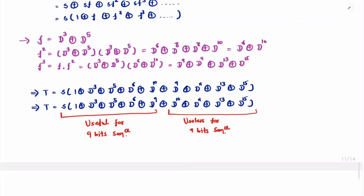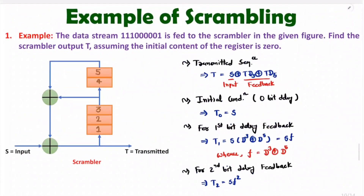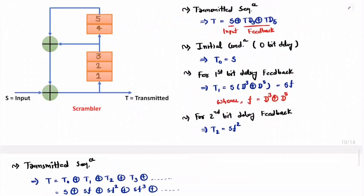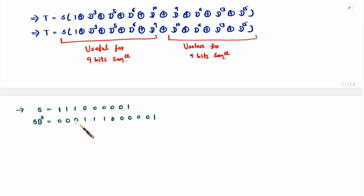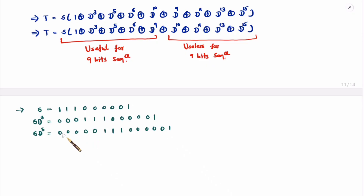S is triple 1, 5 times 0, and 1. S·d³ means a delay of 3 bits, so we pad with 3 zeros then write the sequence: 000 111 00000 1. S·d⁵ means 5-bit delay, so 5 zeros then triple 1, 5 times 0, and 1. Each multiplication by dⁿ introduces n zeros of zero-padding at the beginning.